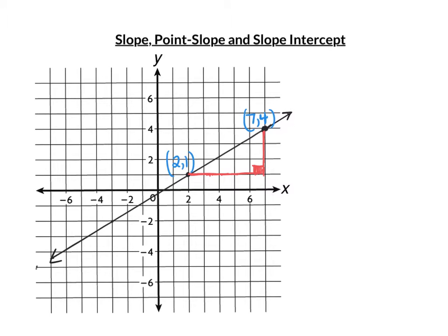Slope, point slope, and slope intercept. First we're going to take a look at slope. Slope refers to the steepness of a line. It is defined as the rise — how much a line rises between two points — over the run.